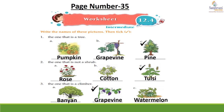Now comes to the second one — the one that is not a shrub — you will tick the C option. A part: first is rose — R-O-S-E. B is cotton — C-O-T-T-O-N. C is tulsi — T-U-L-S-I. Now comes to the third one — the one that is a climber — you will tick option B. A part: this is banyan — B-A-N-Y-A-N. B part: this is grapevine — G-R-A-P-E-V-I-N-E. C is watermelon — W-A-T-E-R-M-E-L-O-N.